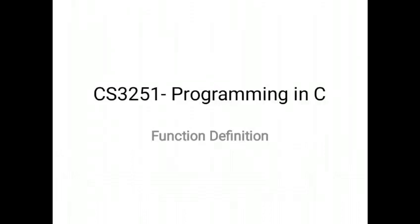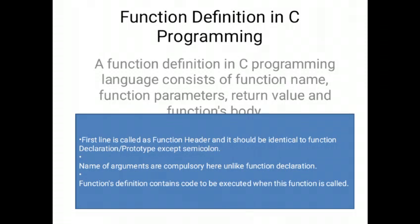The topic we are going to see is function definition. A function definition in C programming language consists of function name, function parameters, return value and function's body.